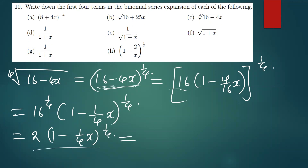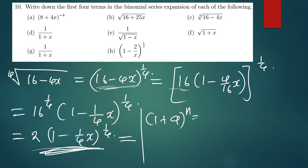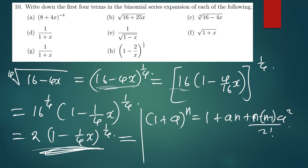Expanding this using the binomial extension is very simple. Remember the extension: (1 + a)^n equals 1 plus an plus n(n-1) times a squared over 2 factorial, and it continues like that.